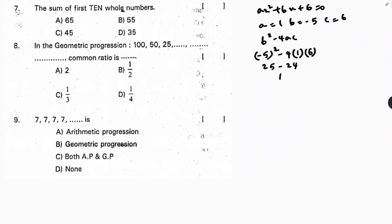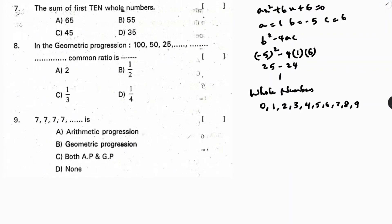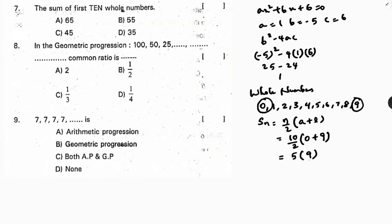Next: find the sum of the first 10 whole numbers. Whole numbers start from 0: 0, 1, 2, 3, 4, 5, 6, 7, 8, 9. Using the sum formula S = n/2 × (a + l) = 10/2 × (0 + 9) = 5 × 9 = 45. Correct option is C.